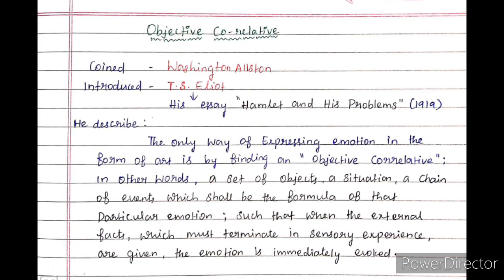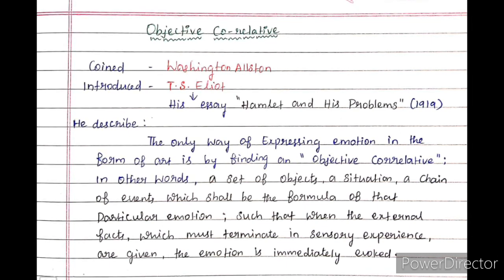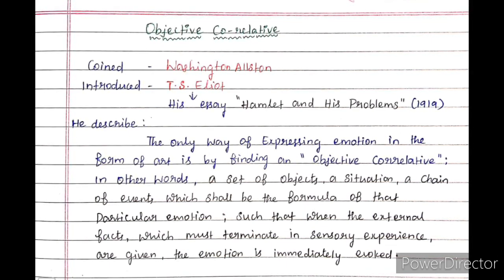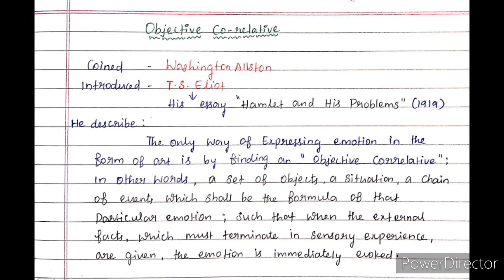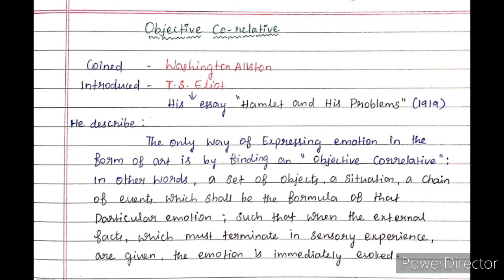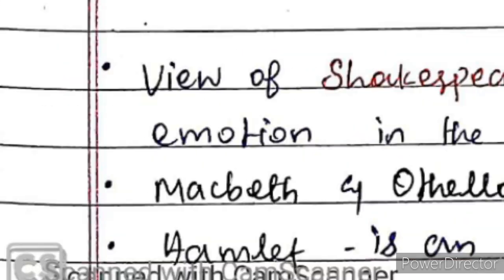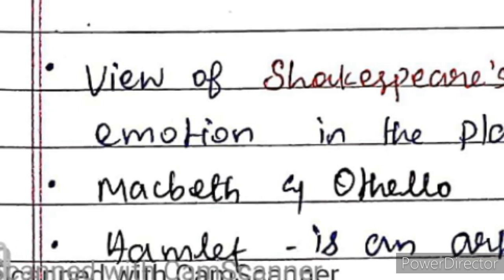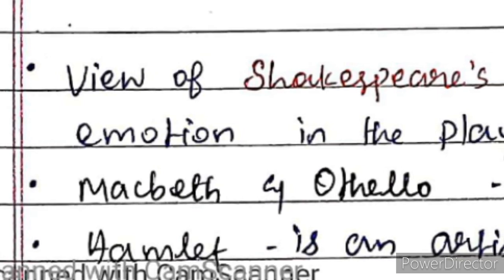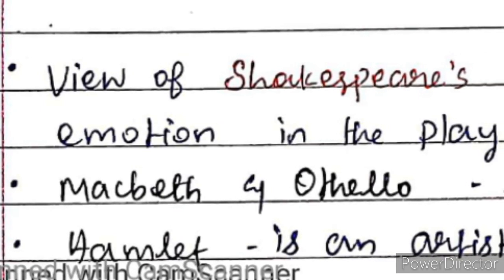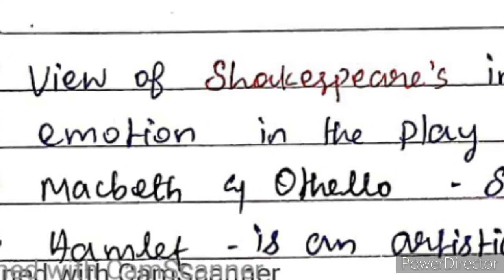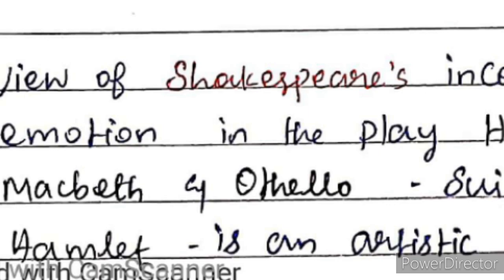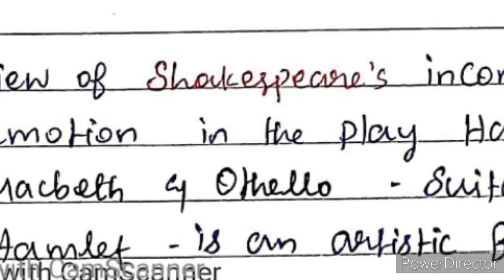This term is world famous. T.S. Eliot used it in relation to Shakespeare. T.S. Eliot's work on Hamlet calls this term an artistic feeling — a way of expressing emotion through external means.